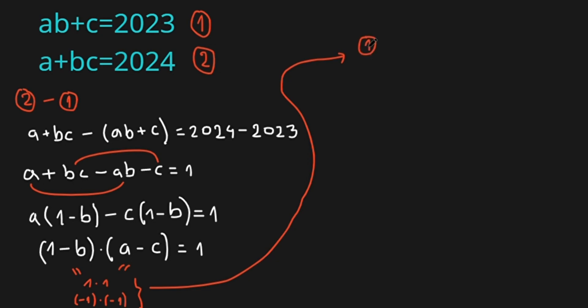The first case: 1 minus B equals 1 and A minus C equals 1. And the second case: 1 minus B equals minus 1 and A minus C equals minus 1.